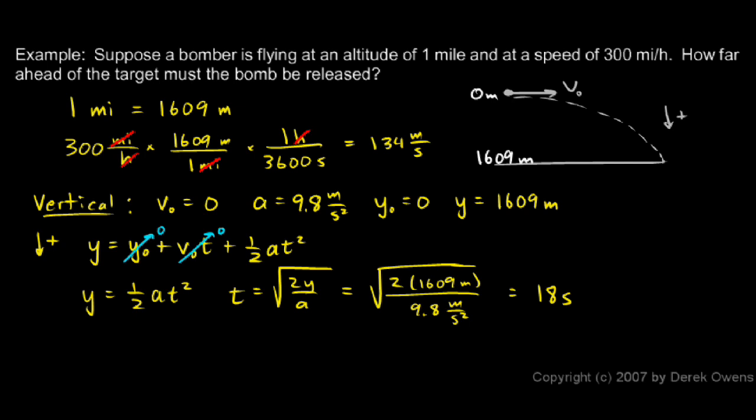That means we need to release the bomb 18 seconds before the plane is directly over the target. And that will determine the horizontal distance before the target. So I figure out that distance using the horizontal motion.